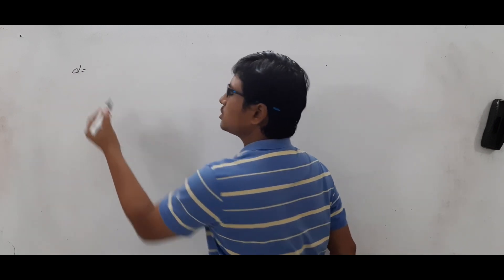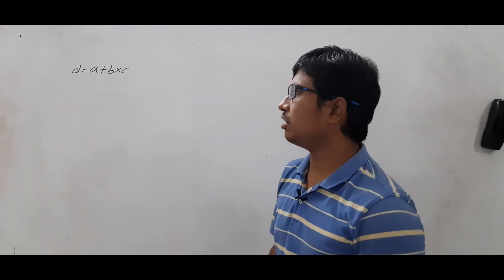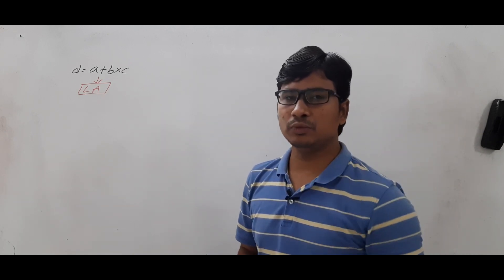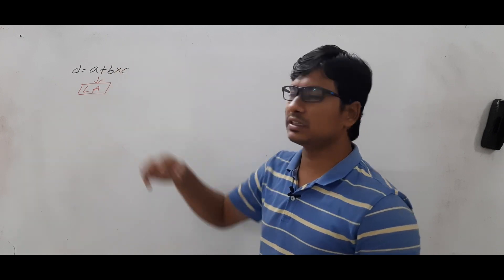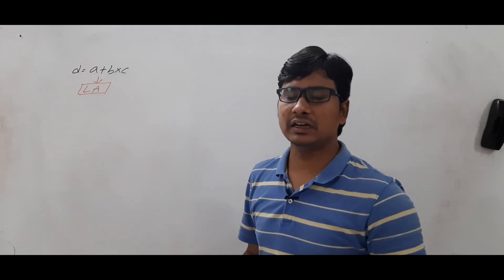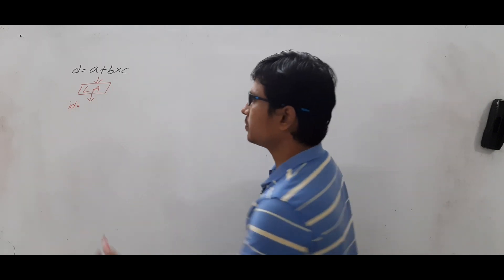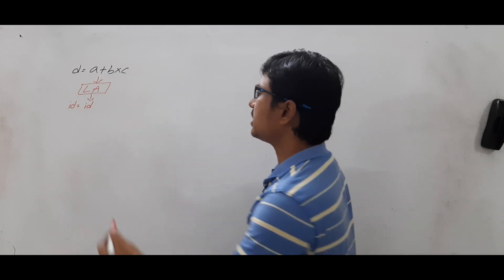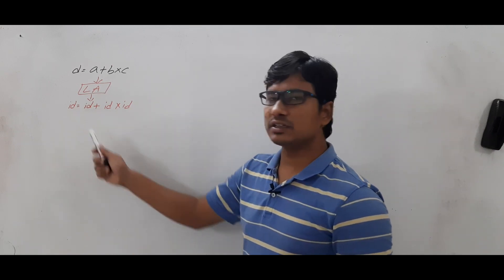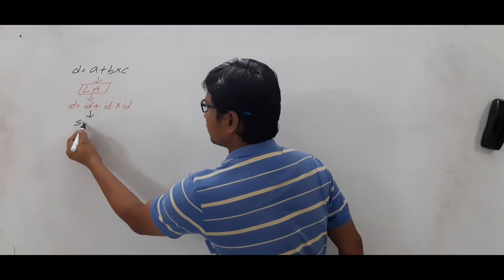I have taken the expression D = A + B * C in the high-level language and given it to the lexical analysis phase. The purpose of lexical analysis is that it takes the high-level language, removes white spaces and comments, and reads it character by character to generate tokens. The tokens generated are: ID = ID + ID * ID, where D, A, B, and C are identifiers and + and * are operators.